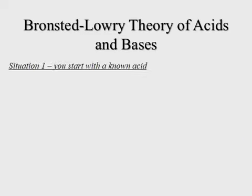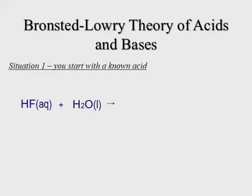We're going to look at three examples. In the first situation, we know we're starting with an acid — for example, HF, hydrofluoric acid. A key difference from the Arrhenius method is that in Brønsted-Lowry, water is included in the equation. So first we decide what's an acid and what's a base: HF is the acid, and since acids give up hydrogens, that hydrogen is going to move over to water, meaning water is acting as the base.